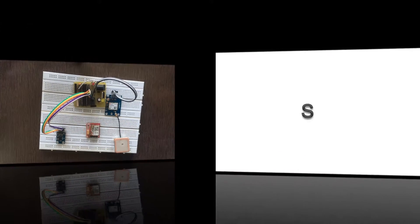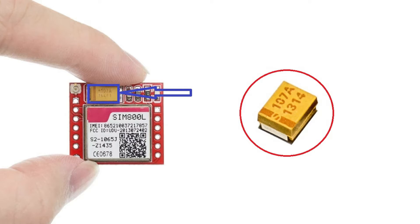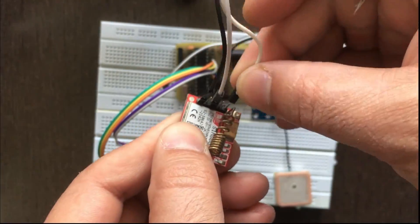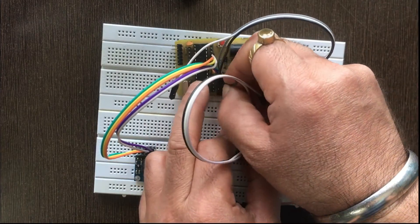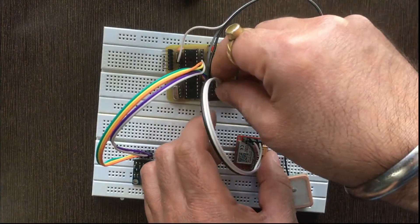Now place the SIM800 module on the breadboard. Note: use only the SIM800L GSM module as shown in the image, because there are lots of SIM800 modules available in the market. You can identify the suitable one by the capacitor with number 107, which identifies the SIM800L module that works with 5V. All other SIM800 modules work with 3.7V to 4.5V. Take three jumper wires and connect VCC to 5V and ground of GSM to the ground pin of your board.